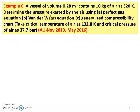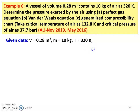Problem number 6: A vessel of volume 0.28 meter cube contains 10 kg of air at 320 Kelvin. Determine the pressure exerted by the air using: part A, perfect gas equation; part B, Van der Waals equation; part C, generalized compressibility chart. The critical temperature of air is 132.8 Kelvin and critical pressure of air is 37.7 bar. This is from November 2019 and May 2016 question papers. Given data: volume = 0.28 meter cube, mass = 10 kilogram, temperature = 320 Kelvin. Working fluid is air.